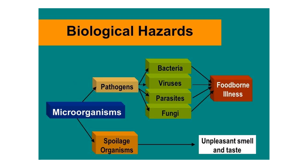Biological organisms are of two types: pathogens and spoilage organisms. Pathogens — bacteria, viruses, parasites, and fungi — may lead to foodborne illnesses. Spoilage organisms may not cause a major health hazard but can lead to spoilage of the food commodity, giving it an unpleasant smell or taste. For example, milk getting sour is an example of spoilage — the naturally sweet taste of milk turns sour due to spoilage-causing organisms.